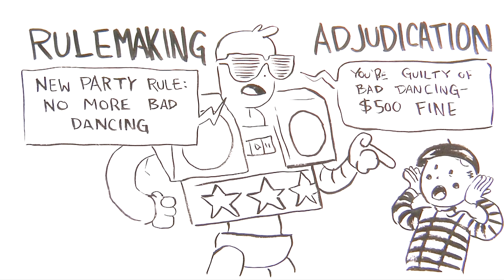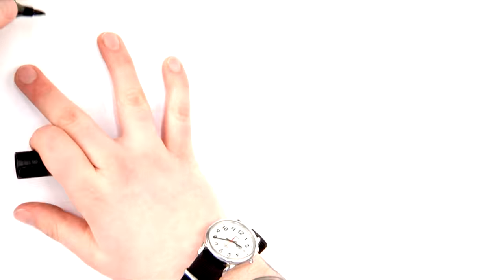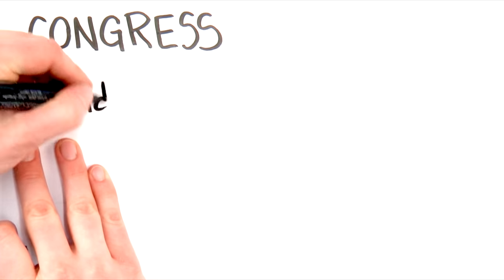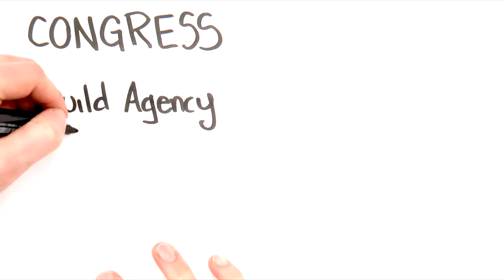We've created a monster. Well, there are several mechanisms for controlling the agencies. First, Congress gets to shape the agency from the beginning. The agency is dependent on Congress for money and power and a purpose.